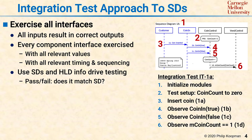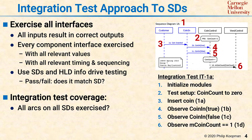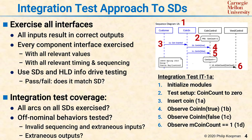For integration testing coverage, the questions you tend to ask are: are all arcs on all sequence diagrams exercised? Are off-nominal behaviors tested? What happens if one of the inputs to a sequence diagram is missing? What happens if one of the preconditions is false? Does the sequence diagram incorrectly trigger? Do you have invalid sequencing? Do you have extraneous outputs? And so on.